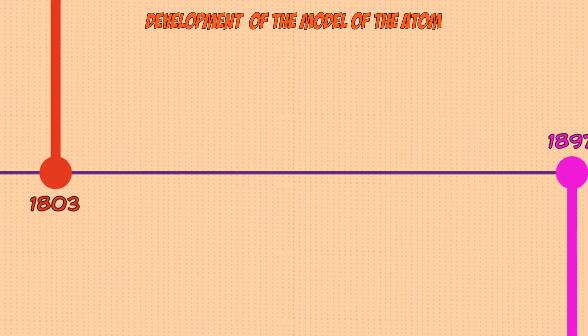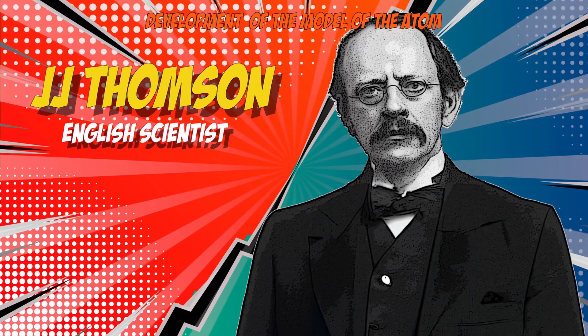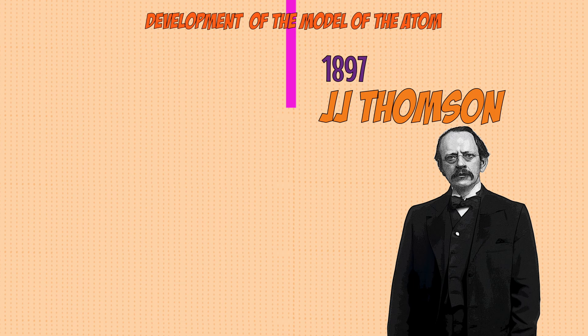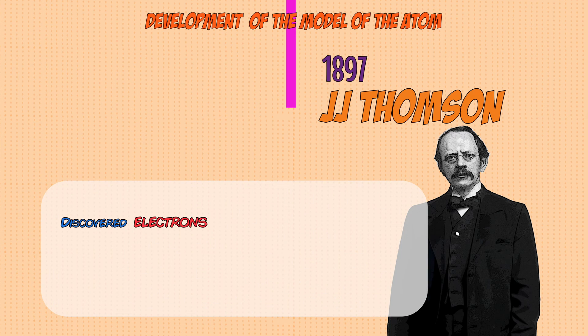This view changed in 1897 with JJ Thompson. He discovered negative charges in the atom, which we call electrons. This led him to propose a new model representing an atom.